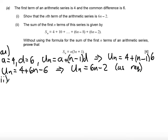Part ii says the sum of the first n terms of this series is given by Sn equals 4 plus 10 etc. Without using the formula for the sum of the first n terms of an arithmetic series prove that sum of n terms is equal to n times 3n plus 1.